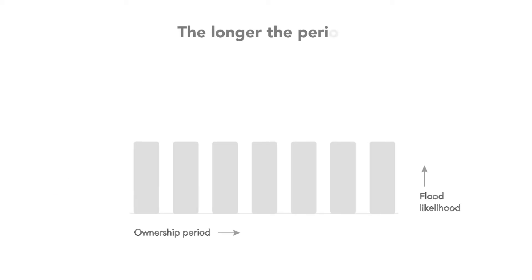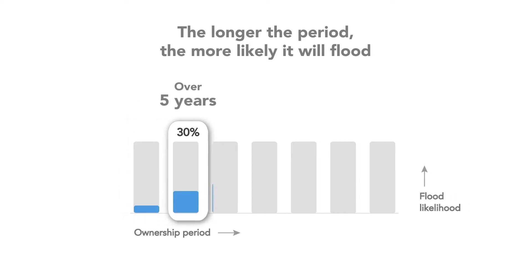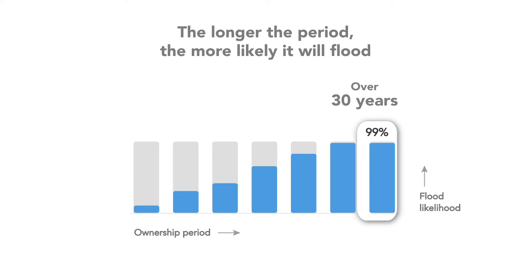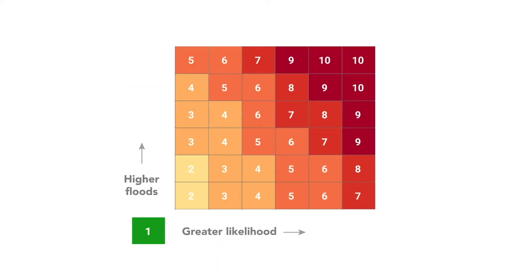Flood Factor aggregates how risks are accumulating and changing over time, which means even very small chances of flooding today can add up to bigger chances over time. All properties have a flood factor of at least one, and the higher a property's flood factor, the larger the property's likelihood or depth of flooding over the next 30 years.